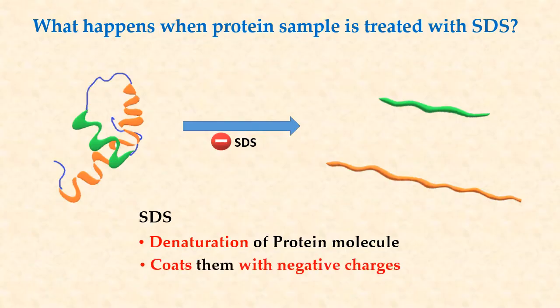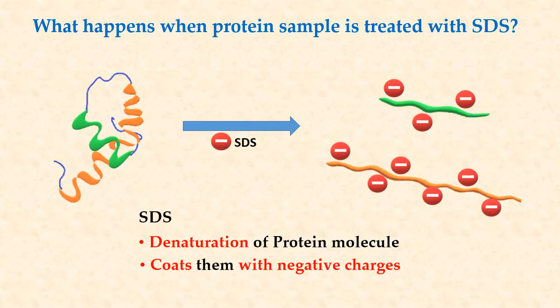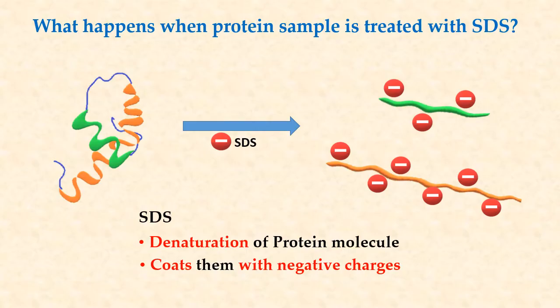Second, the SDS molecules coat the disrupted proteins. Approximately, the hydrophobic tail of one SDS molecule associates with every two amino acid residues. This coating of SDS molecules masks the original charges of the amino acid residues of the protein. We also know that proteins may have disulfide bridges in their native form. To disrupt these bonds, a reducing agent such as beta-mercaptoethanol is also added.